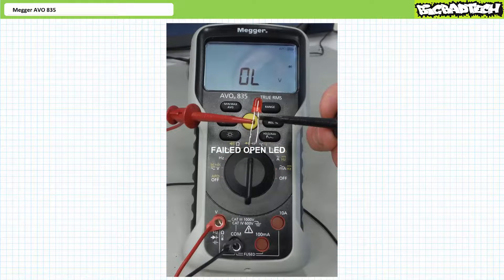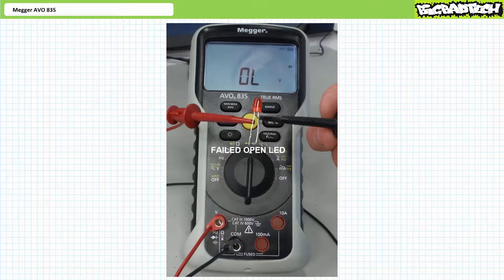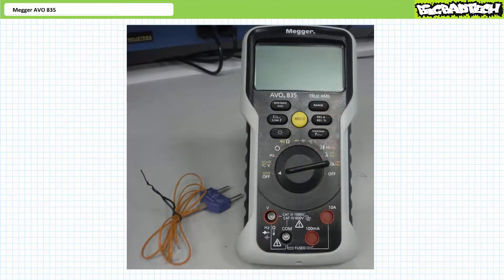Here's an example of an opened LED. The Mega AV0835 indicates voltage over limit while in the forward bias orientation indicating this open and unilluminated LED will not permit current flow in either direction. Let's now take a quick look at the temperature measurement function.